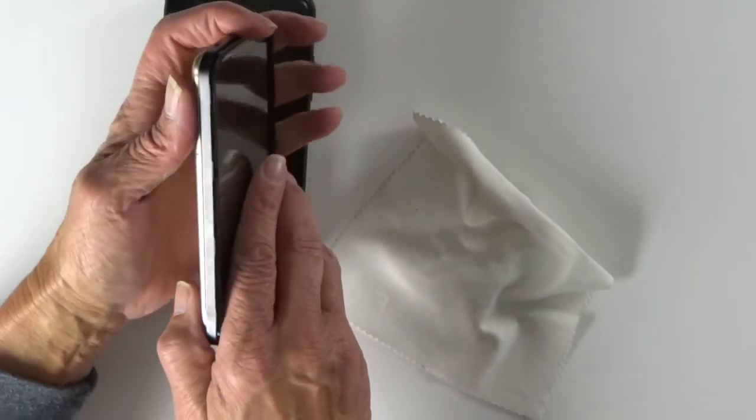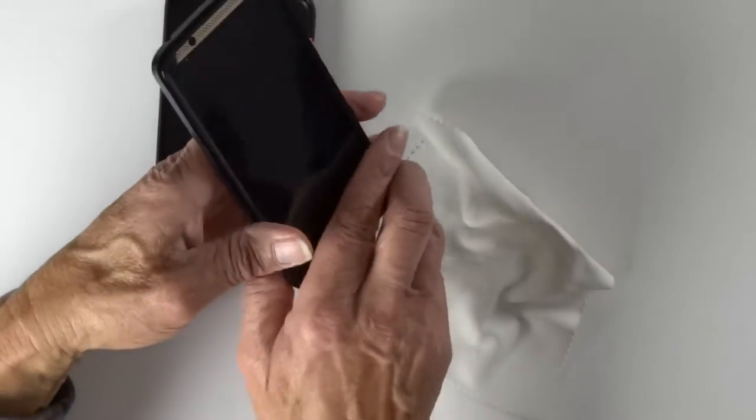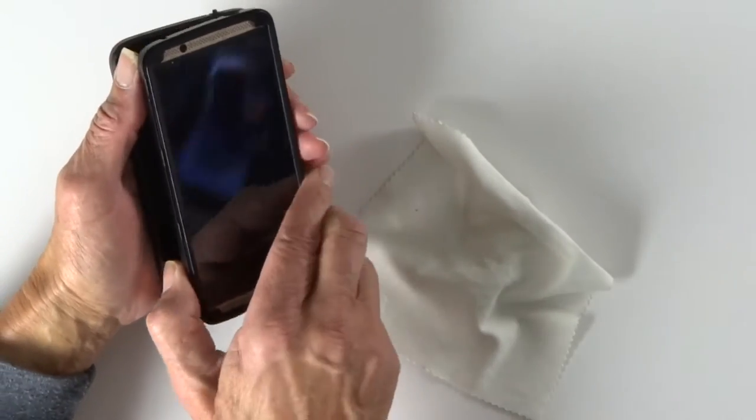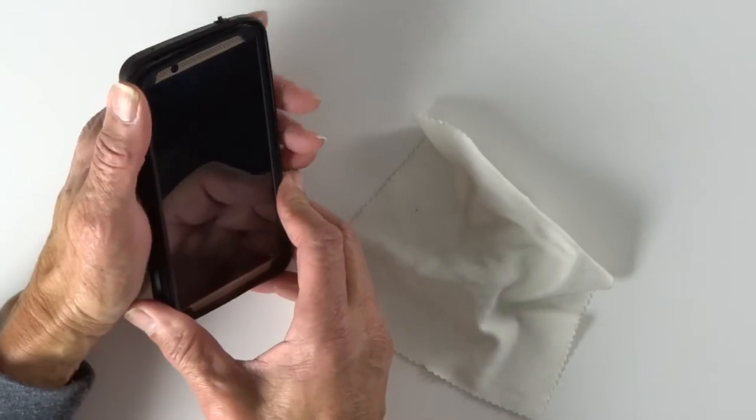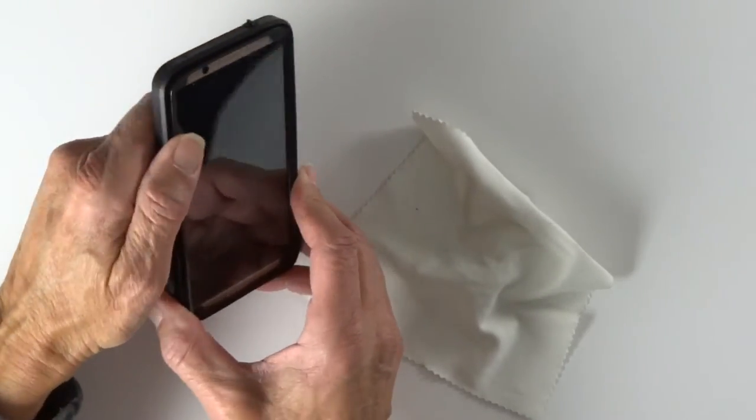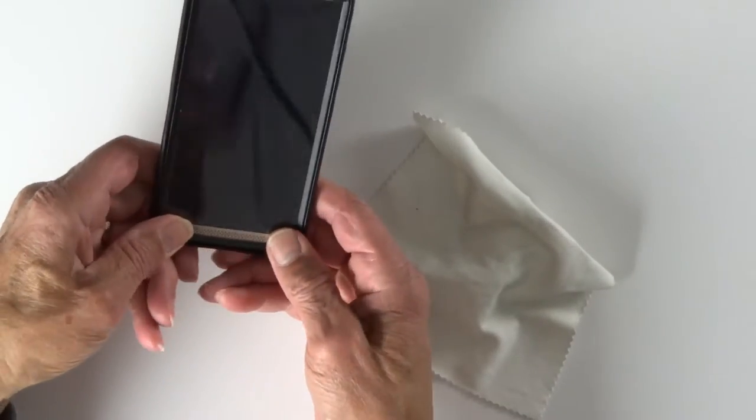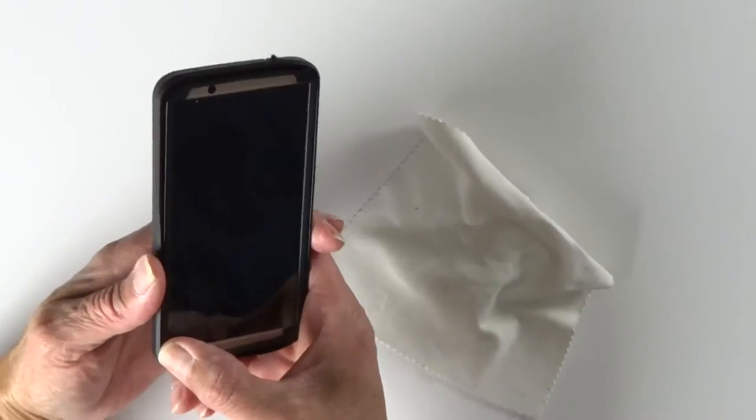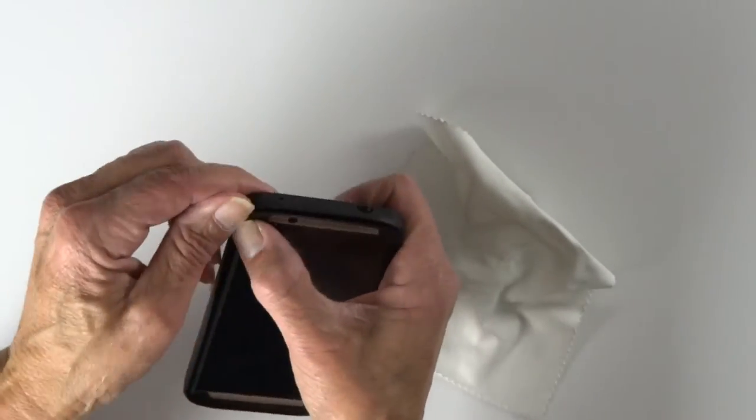So the phone just pops into that top part very easily. Then you just take the entire thing, stick in the button side first, and pop it on. You've just got to make sure you go all the way around to pop it in real good. And once it's in, it's on there really solid.